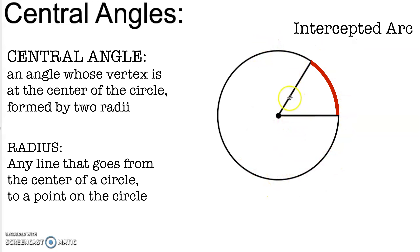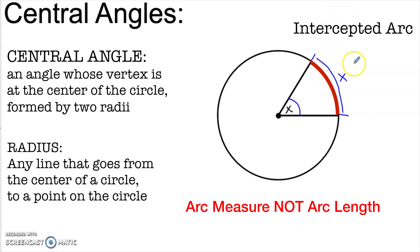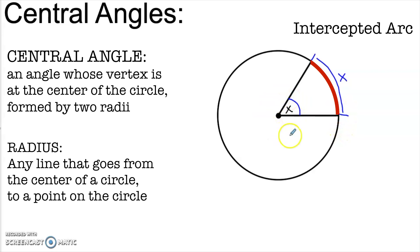If I open it up to a 180 degree angle, the angle will intercept half of the circle. If I open it up to 270 degrees, the angle would intercept three-quarters of the circle, and so on. So there's this nice one-to-one relationship between the size of the central angle and the size of the arc that it intercepts. Whatever the size of the central angle is in degrees, we call the measure of the intercepted arc by the same number of degrees. So if this was a 40 degree central angle, we would say that this intercepted arc is also 40 degrees.